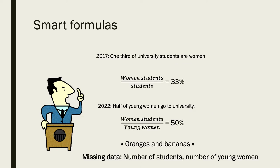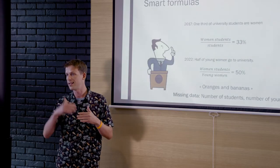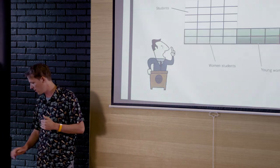Because in one case you are computing the ratio between the number of women students over the total number of students, which can be one-third. And in the second case it's just the number of women students by the number of young women. And these two ratios can be different, okay? You can look on this picture.